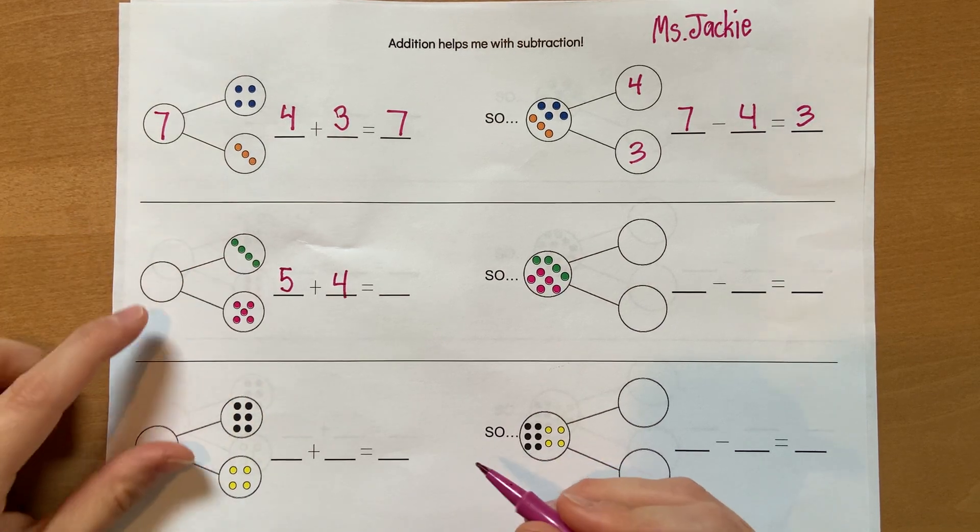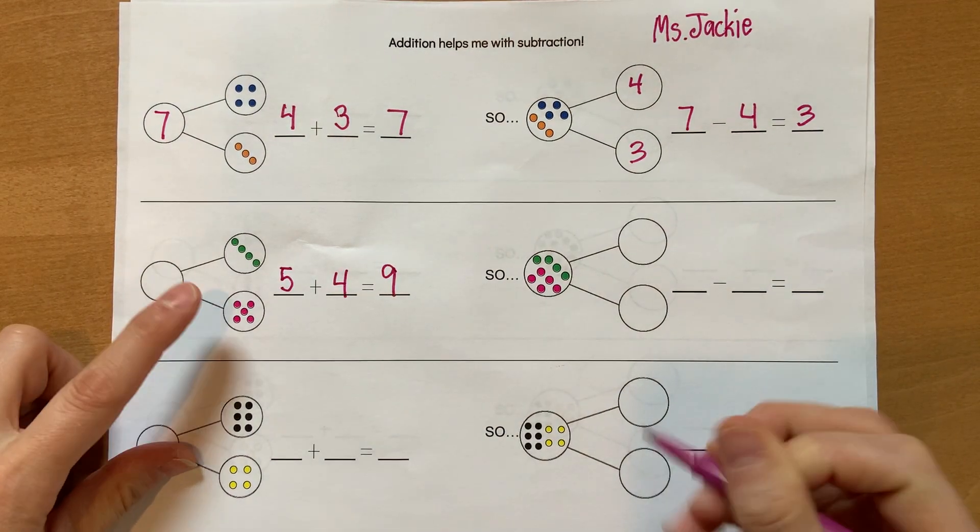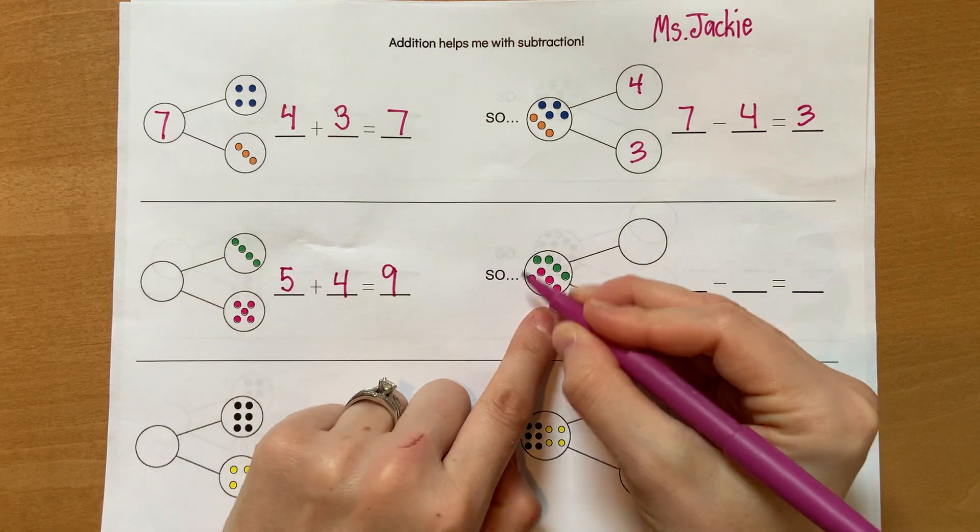I'm going to start with five and count on five, six, seven, eight, nine. Five plus four equals nine. So that's going to be my whole, nine.